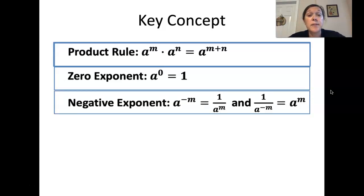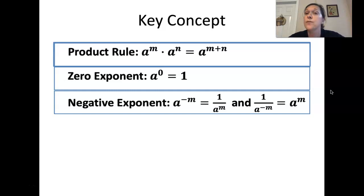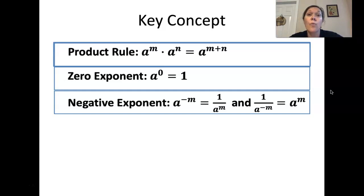Negative exponents: whenever you have a negative exponent, you can move it either from a numerator to the denominator or denominator to the numerator, and that will make it become positive. So if I have a to the negative nth power, to turn that into a positive exponent, we would put that as 1 over a to the nth. Or if I had 1 over a to the negative nth power, I could move that up to the numerator and it would become a to the positive n.